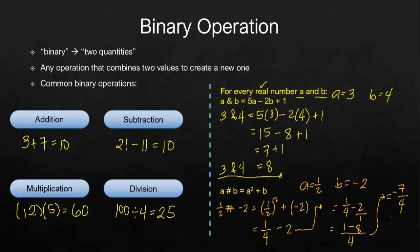So meaning this is the value for our 1 half hashtag negative 2. So that's it for the definition of binary operation. Take note that binary operation always combines two quantities to create a new one. It depends upon the definition of the operation as to what you will do to the two quantities to get a new one.